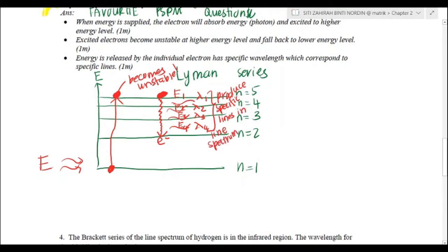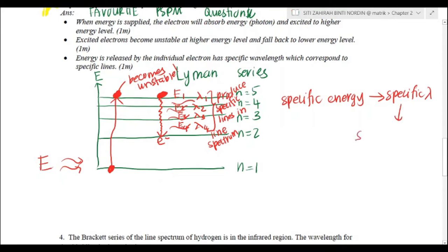To recap, you just need to remember three sentences to get three marks. First, there is an electron at the lower ground state. It receives energy and becomes excited to a higher energy level where it is unstable. It then falls back, producing energies of different wavelengths, thus producing specific or different lines. The key point: specific energy produces specific wavelength, which produces specific lines.